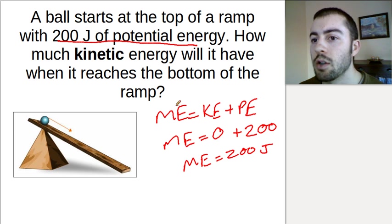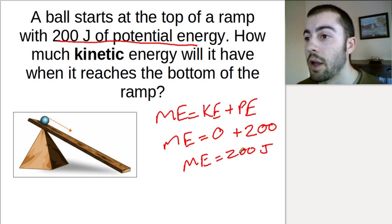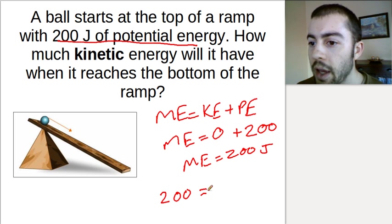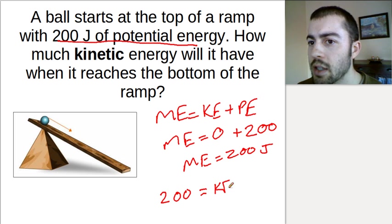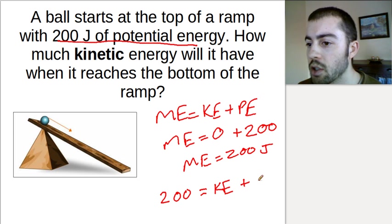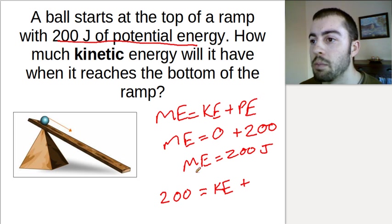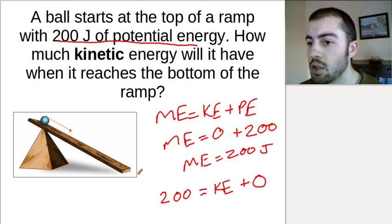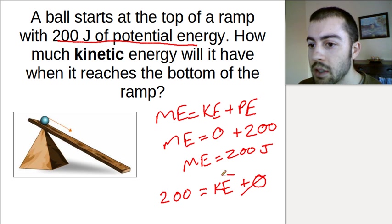How much kinetic energy will we have at the bottom of the ramp? We know the mechanical energy has to stay constant at 200 joules, and that has to equal the kinetic energy plus the potential energy. At the bottom of the ramp, what would our potential energy be? At the bottom, there would be no height, so if there's no elevation, the potential energy would be zero — we've lost all gravitational potential energy once the ball reaches ground level. Dropping out the zero, we can see that the kinetic energy would have to be 200 joules.